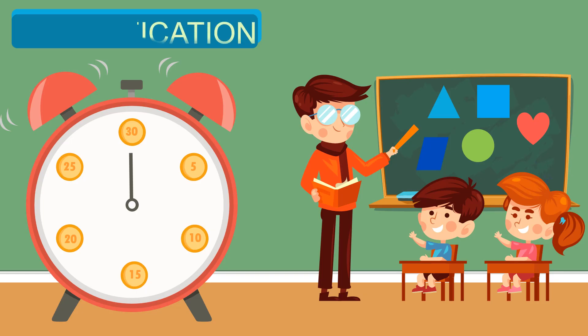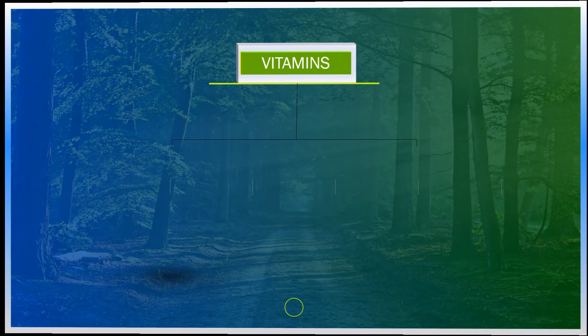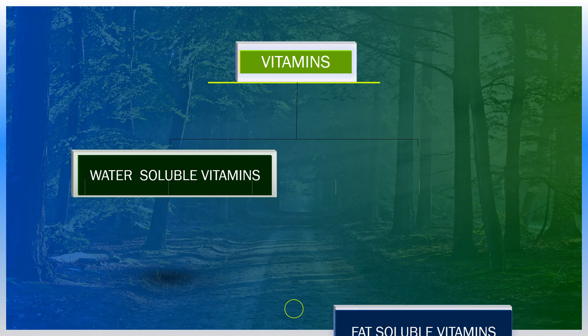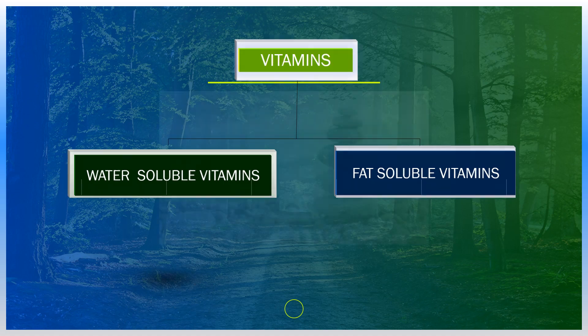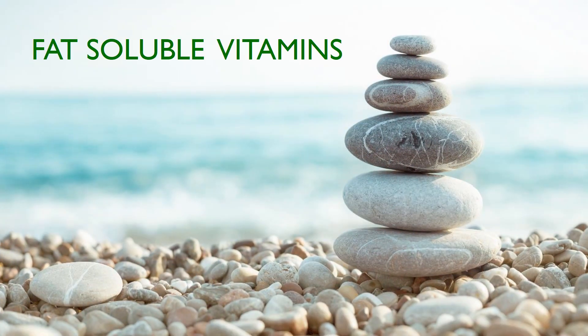Now let us see the classification. Vitamins are classified as water-soluble and fat-soluble vitamins. In humans, there are 13 vitamins: 4 fat-soluble — A, D, E, and K — and 9 water-soluble — 8 B vitamins and C. Water-soluble vitamins dissolve easily in water and are generally readily excreted from the body. Fat-soluble vitamins tend to stay stored in our body for a long time.